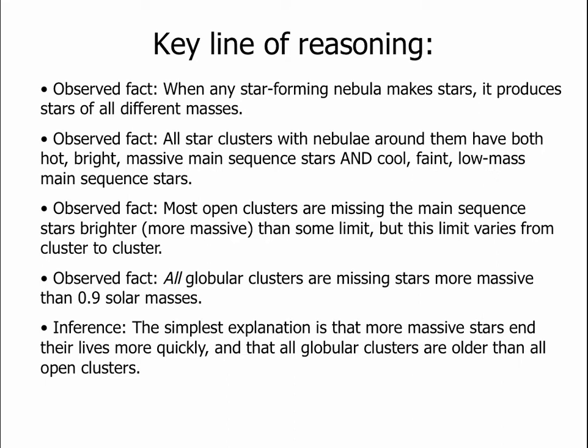It's also observed that no globular clusters have stars more massive than 90% the mass of the Sun — 0.9 solar masses — though they do have stars from 0.9 solar masses all the way down to the least massive stars we know about. We can tie this together with the hypothesis that more massive stars end their lives more quickly. As clusters age, low-mass stars remain, but high-mass stars have used up all their fuel and are gone. This implies all globular clusters are older than 10 billion years, while all open clusters are younger than that.